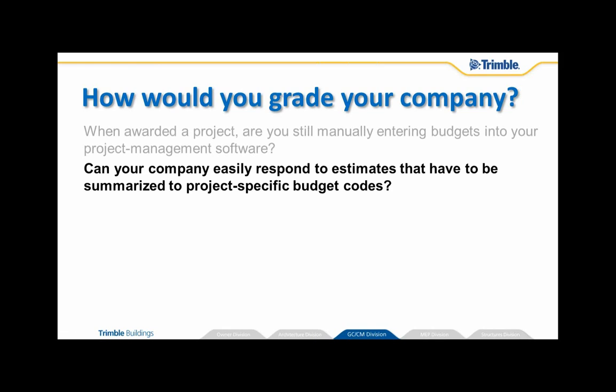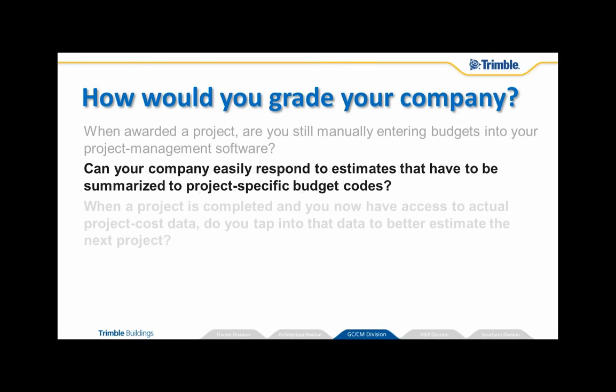Secondly, it seems more and more — especially with requirements that owners are demanding from contractors today in terms of report output and project updates — that it's no longer good enough to have a fixed set of budget codes or job cost codes associated with a project management or job costing system. In some cases, if you do work for owners with significant spending power, you may have to adhere to project-specific budget codes. The question becomes: how easily can you adapt assigning items in an estimate to those project-specific budget codes?